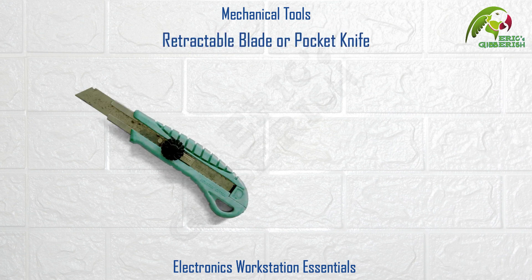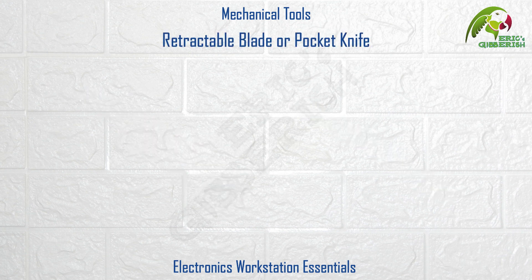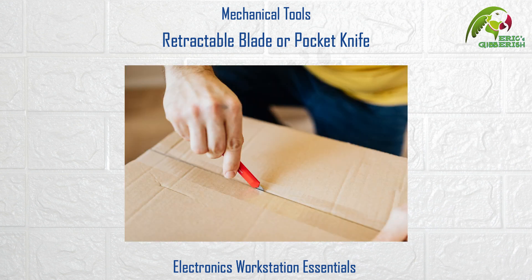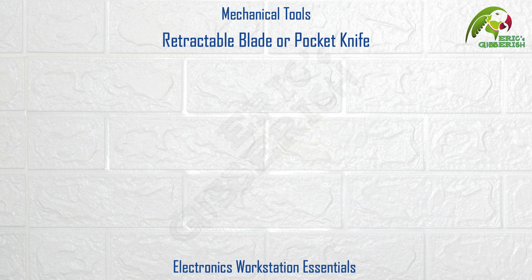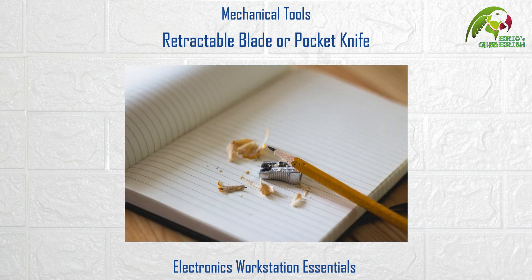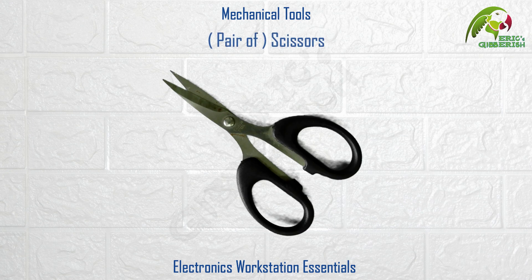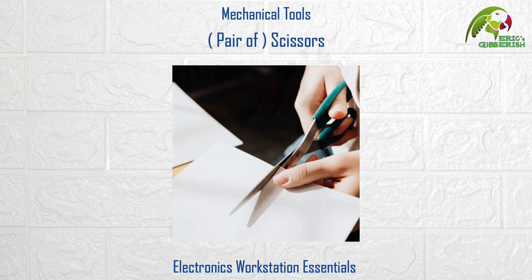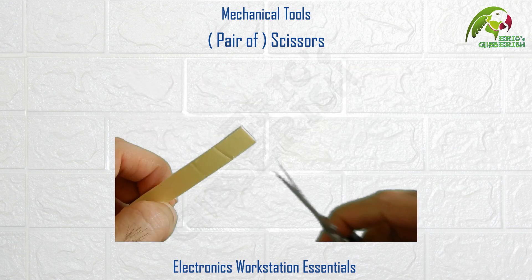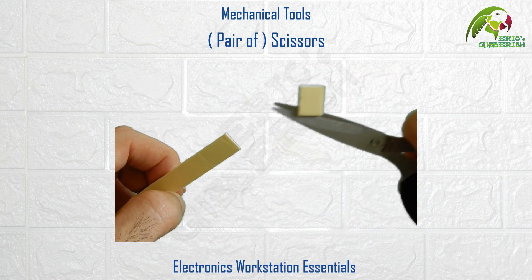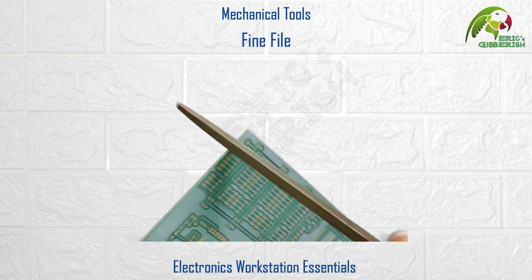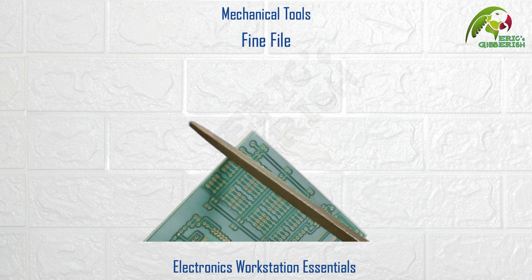Retractable blade or pocket knife. A very useful tool for cutting papers and cardboard, opening packages etc. Sometimes even creatively used to sharpen pencils in the absence of a pencil sharpener. Pair of scissors — again a very useful tool for cutting papers and cardboards, opening packages, and cutting single and double sided tapes. Fine file — useful to smoothen out any kind of rough edges or surfaces.